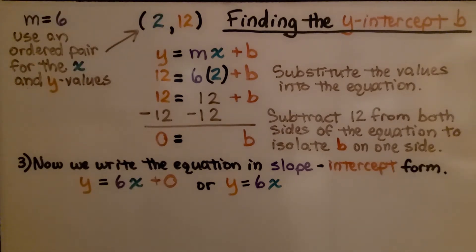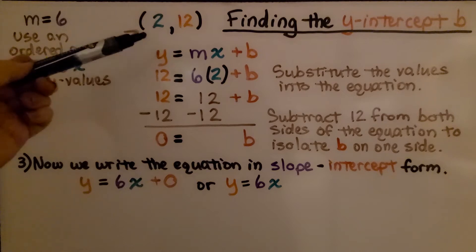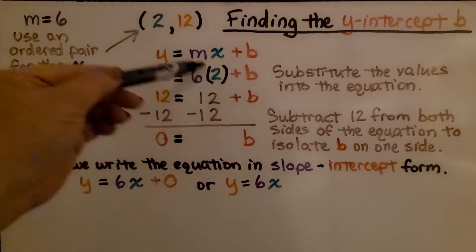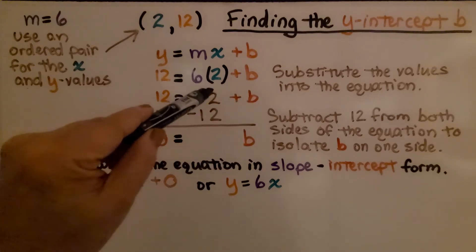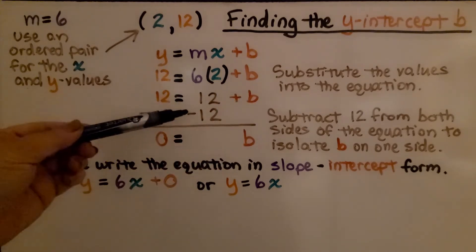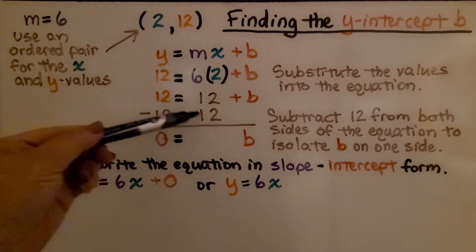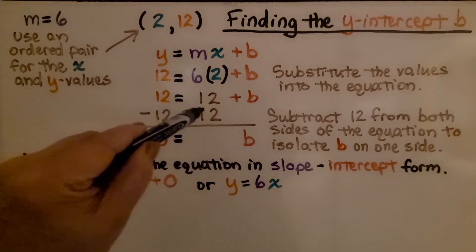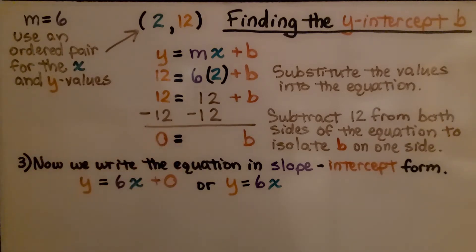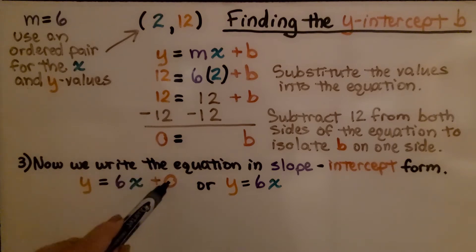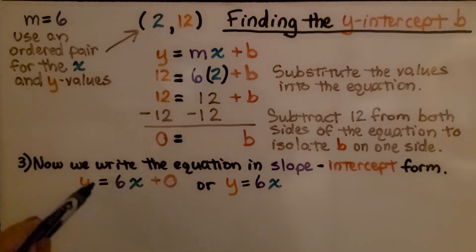So now we're going to find the y-intercept b. We have our slope-intercept form and substitute the values into the equation: 12 for y and 2 for x. That gives us 12 = 6 times 2 plus b, which is 12 = 12 + b. We subtract 12 from both sides to isolate b, making zero pairs, and get b = 0. So we write the equation as y = 6x plus 0, or simply y = 6x.